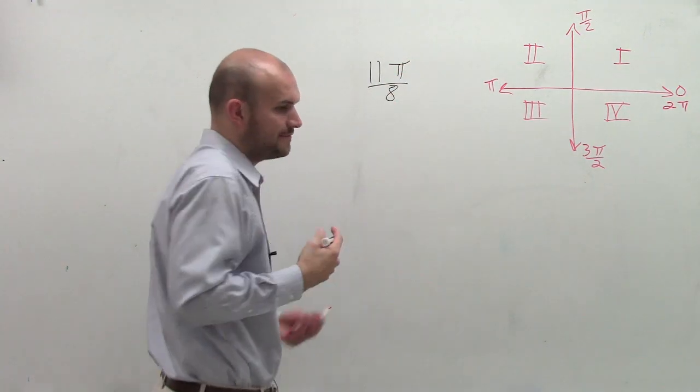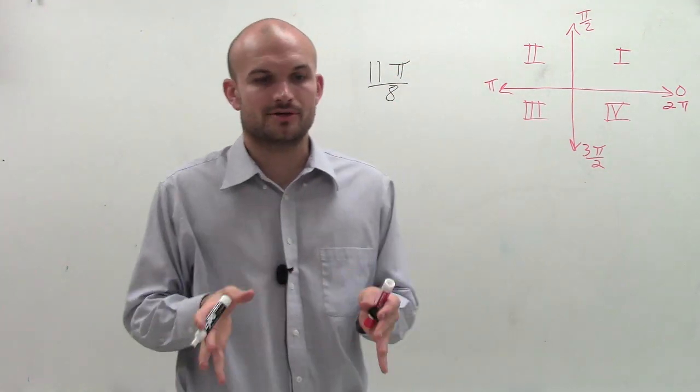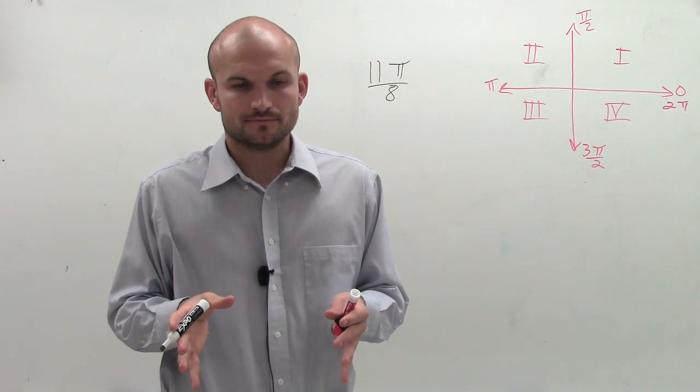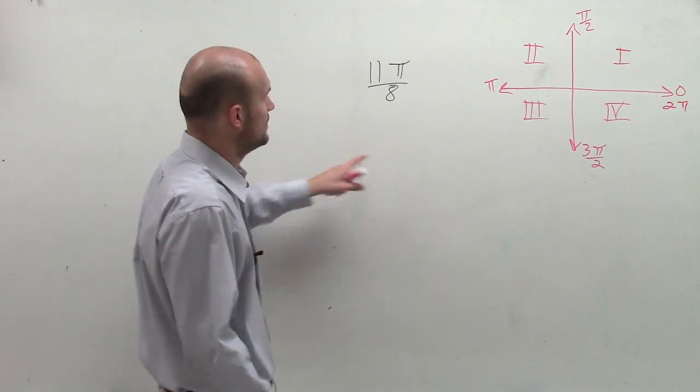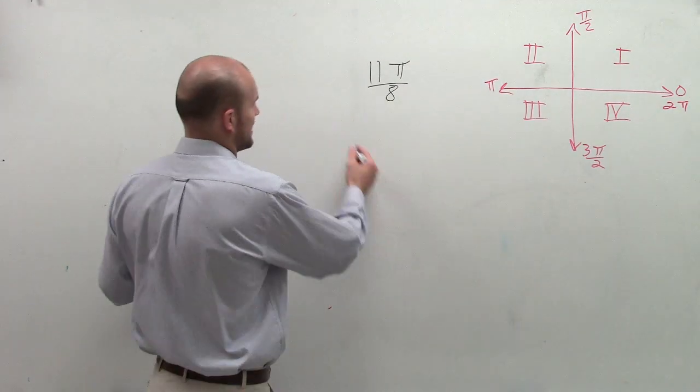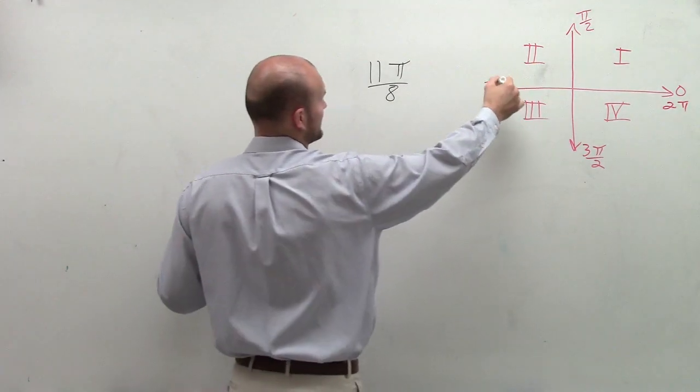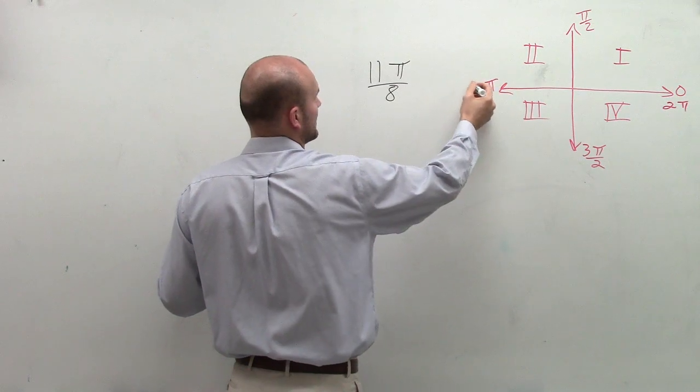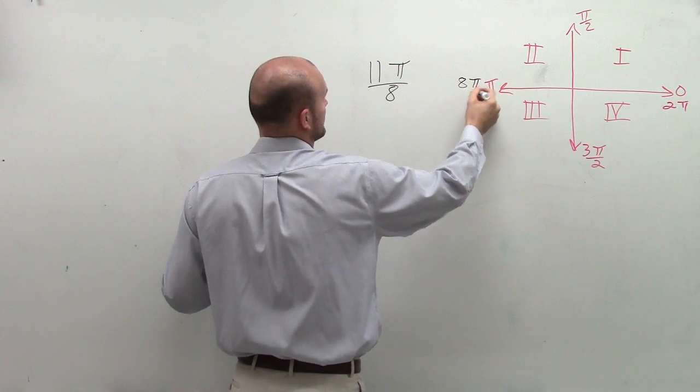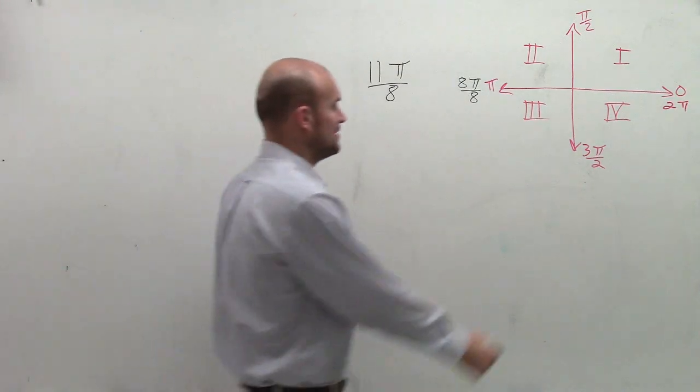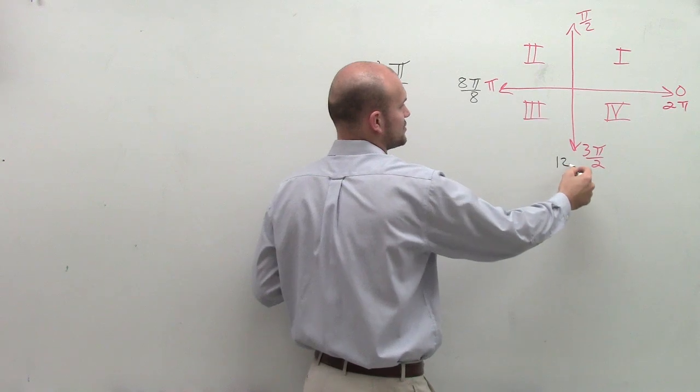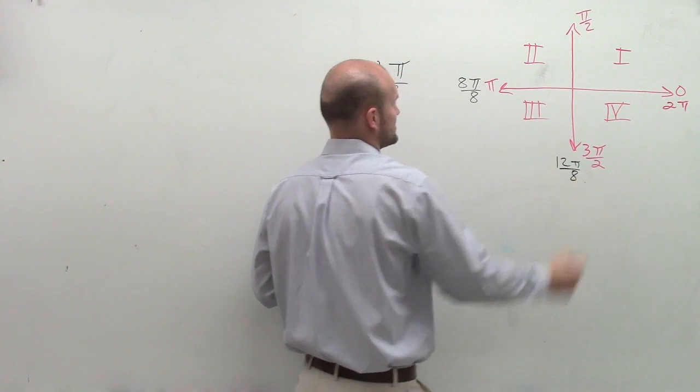So to determine where 11π over 8 is, what I'm going to do is work through how we can represent this. So let's look at 11π over 8. It would be between, let's see, that would be 8π over 8, right? And if I was going to do 3π over 2, that would be 12π over 8.